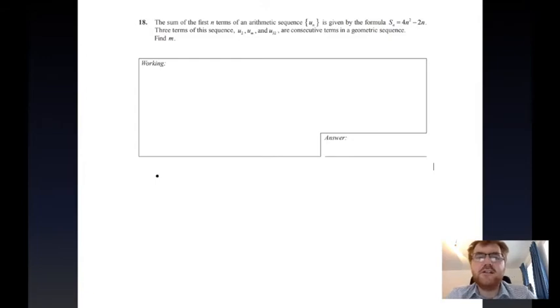The sum of the first n terms of an arithmetic sequence are given by the sum formula 4n squared minus 2n. Three terms of this arithmetic sequence, u2, um, and u32, are actually consecutive terms of a geometric sequence, and somehow you've got to find what m is.